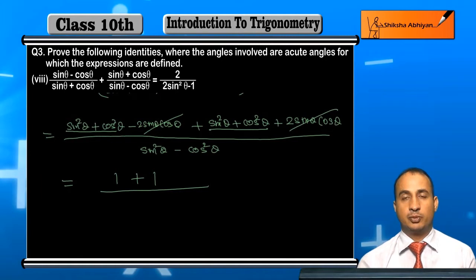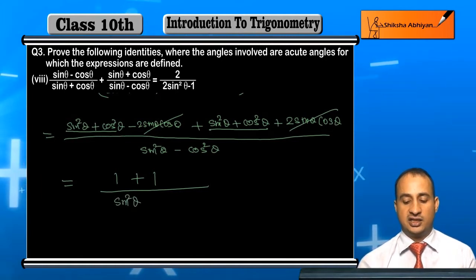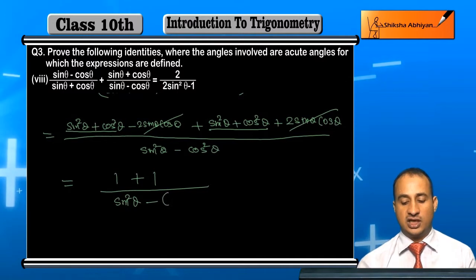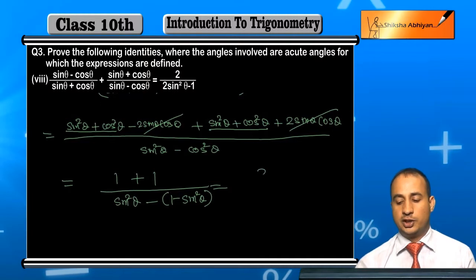You need sine square in the answer. So see, I can write sine square theta minus cos square theta. Cos square theta can be written as 1 minus sine square theta.